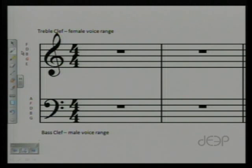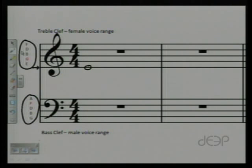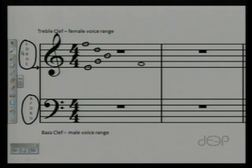The lines and spaces of the staff are used to indicate specific pitches. On the treble clef, the lowest line is E. The next line above that is G, then B, D, and F. The notes that fall in the spaces between would be F, A, C, and E.